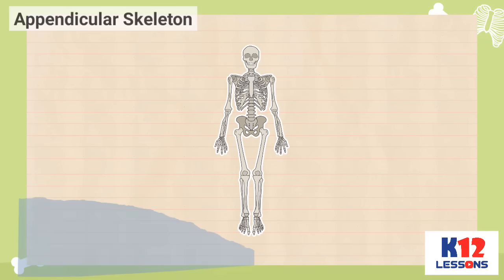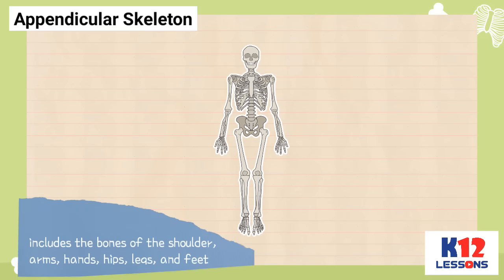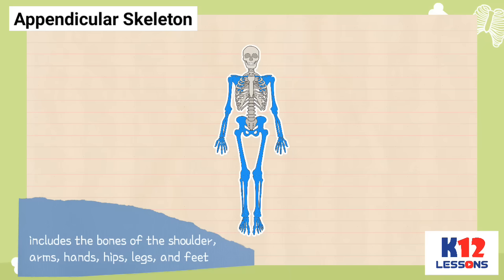The appendicular skeleton includes the bones of the shoulder, arms, hands, hips, legs, and feet.